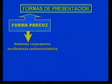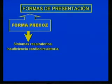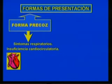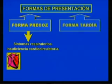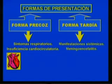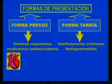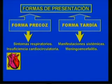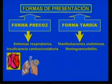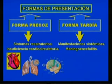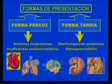There are two forms of infection presentation: an early form where respiratory symptoms and cardiorespiratory insufficiency predominate, and a late-onset form with systemic manifestations and meningoencephalitis. Neonatal sepsis can affect different organs and systems, including pulmonary infection, central nervous system, urinary tract, joints, and bones.